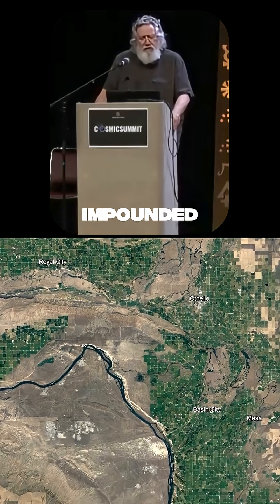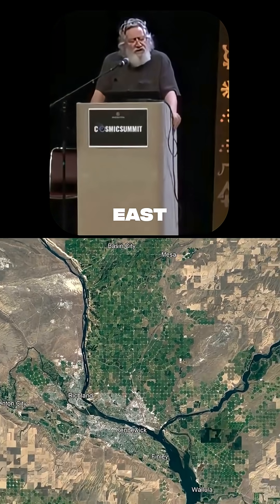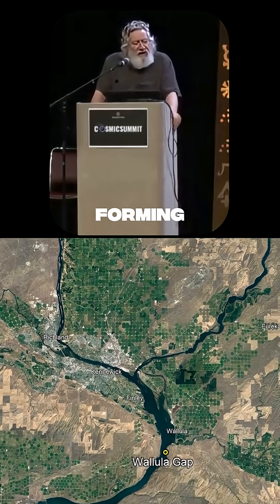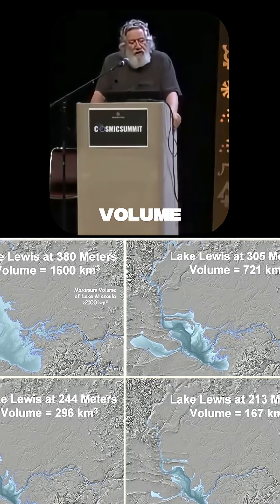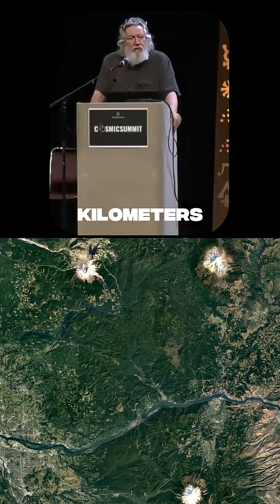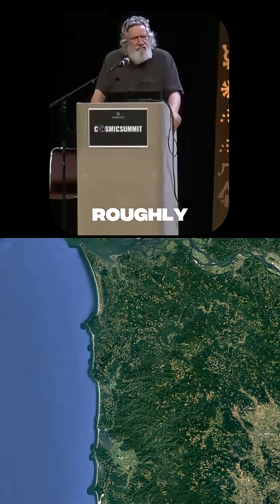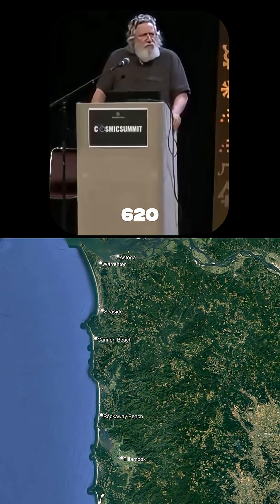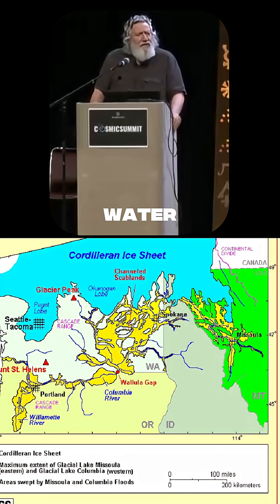The ice thereby impounded the Clark Fork River drainage to the east, forming a lake extending into western Montana with a water volume of about 2,500 cubic kilometers, which is roughly 620 cubic miles of water.